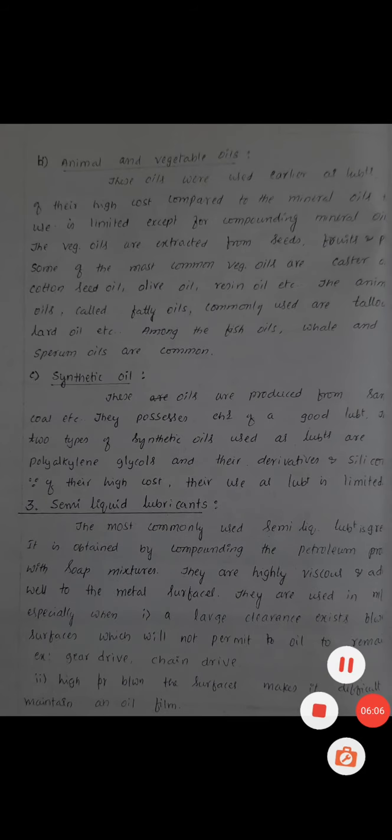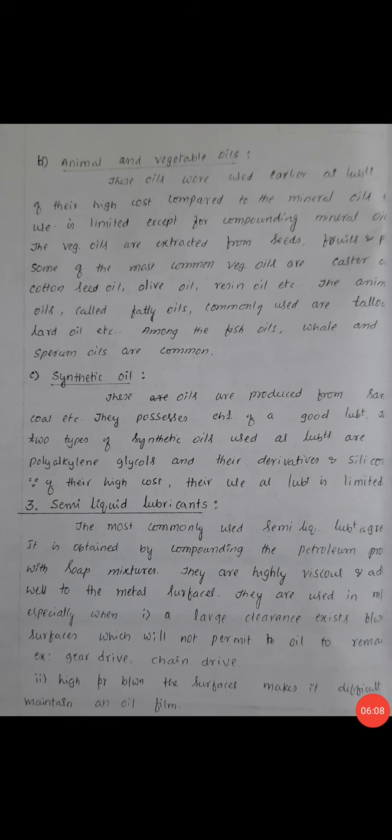The last classification of liquid lubricants is synthetic oils. These oils are produced from coal and similar sources. They possess the characteristics of good lubricants. Two types of synthetic oils used as lubricants are polyalkylene glycols and silicone derivatives. Because of their high cost, their use as lubricants is limited.